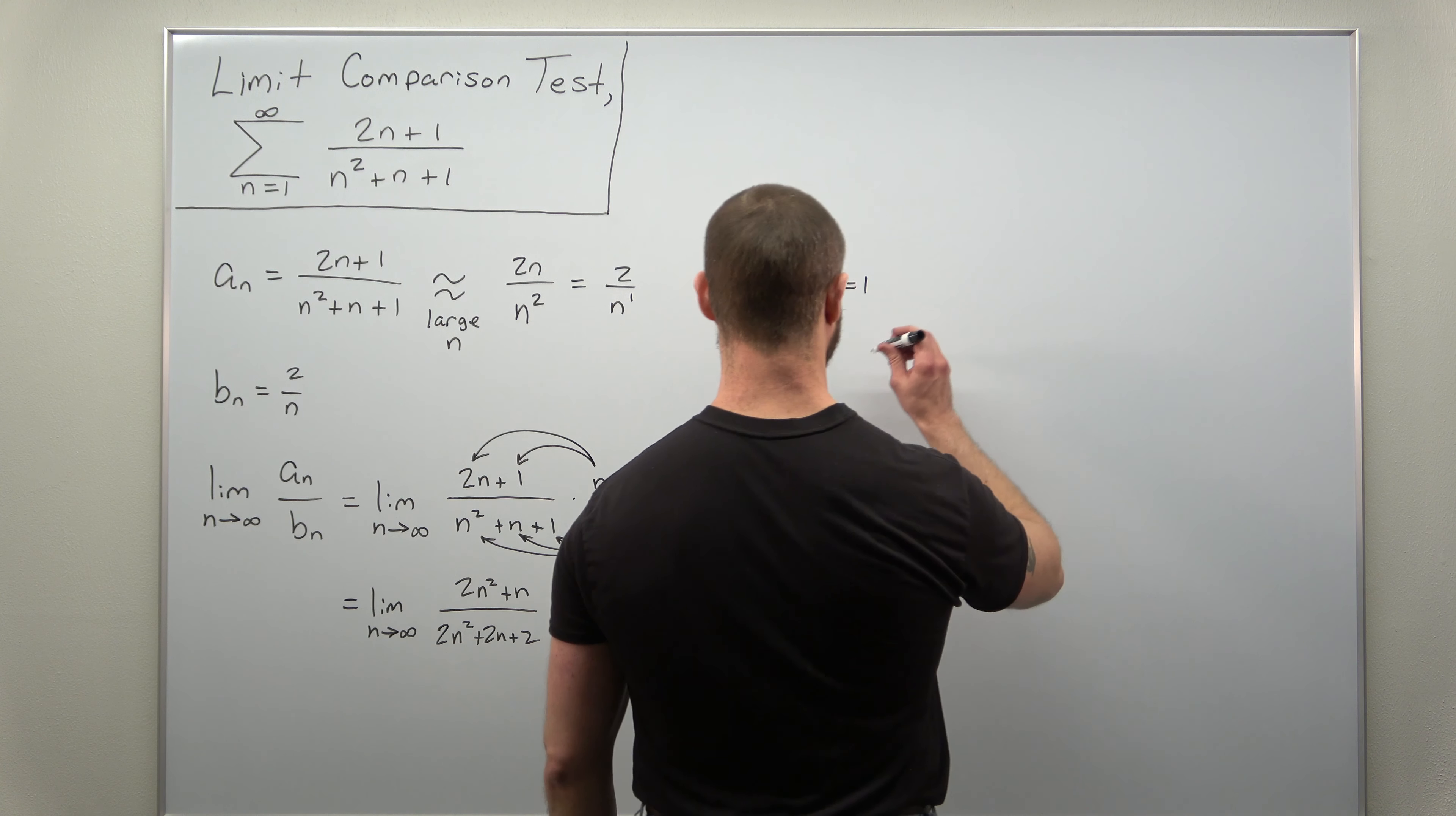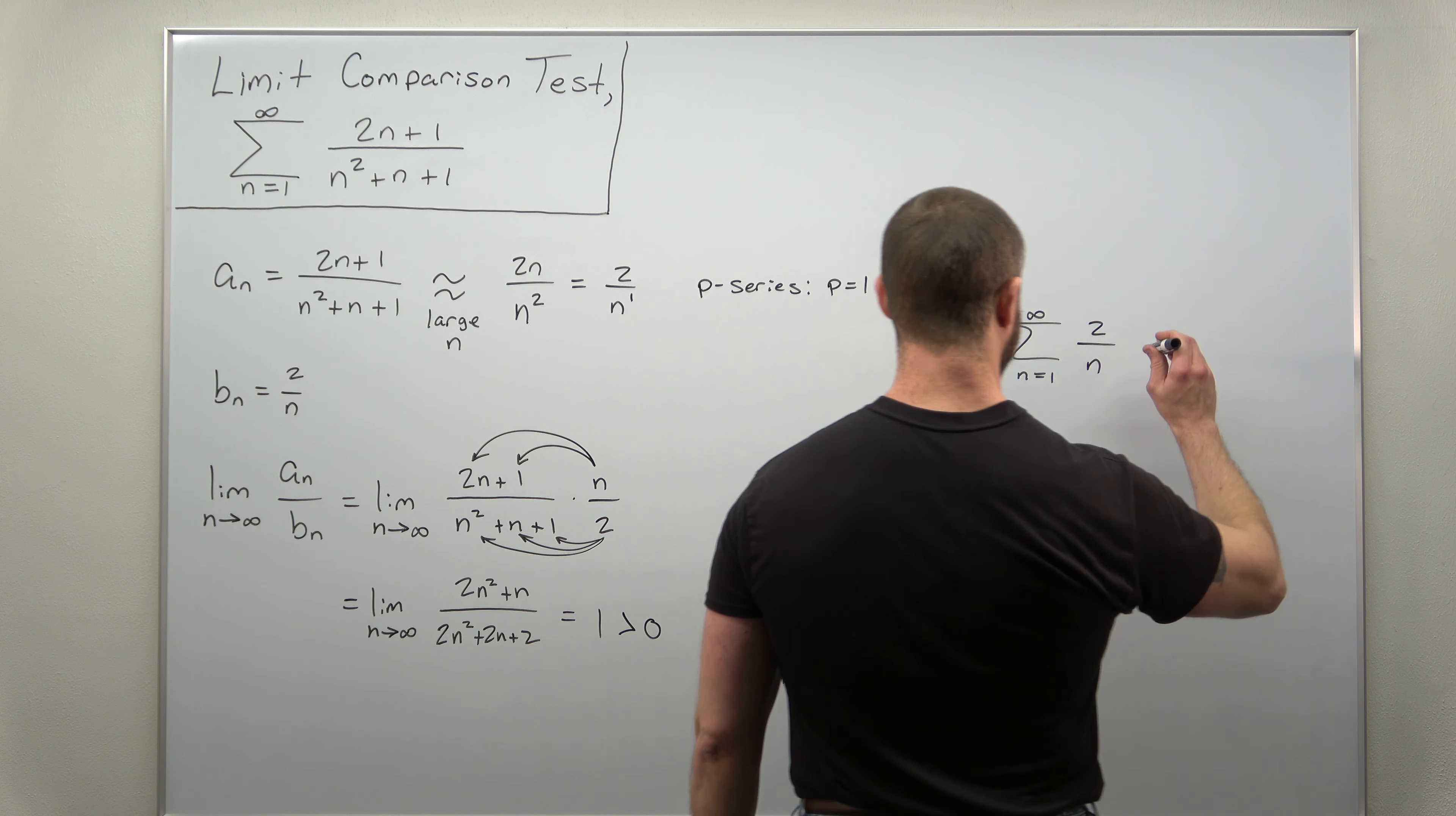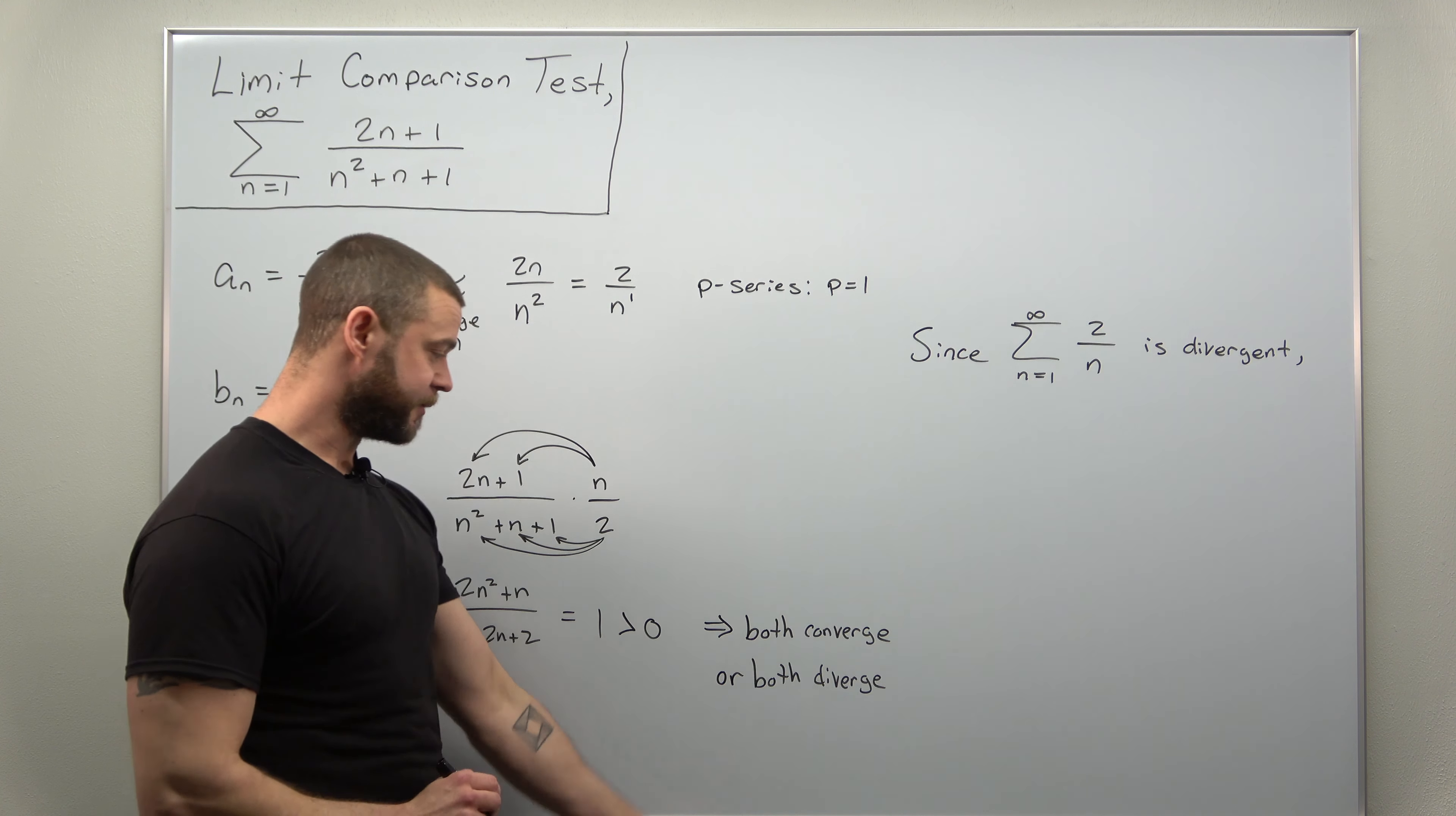So if we just write this, since the infinite series involving the term b_n, since that is divergent, then our given infinite series is also divergent.